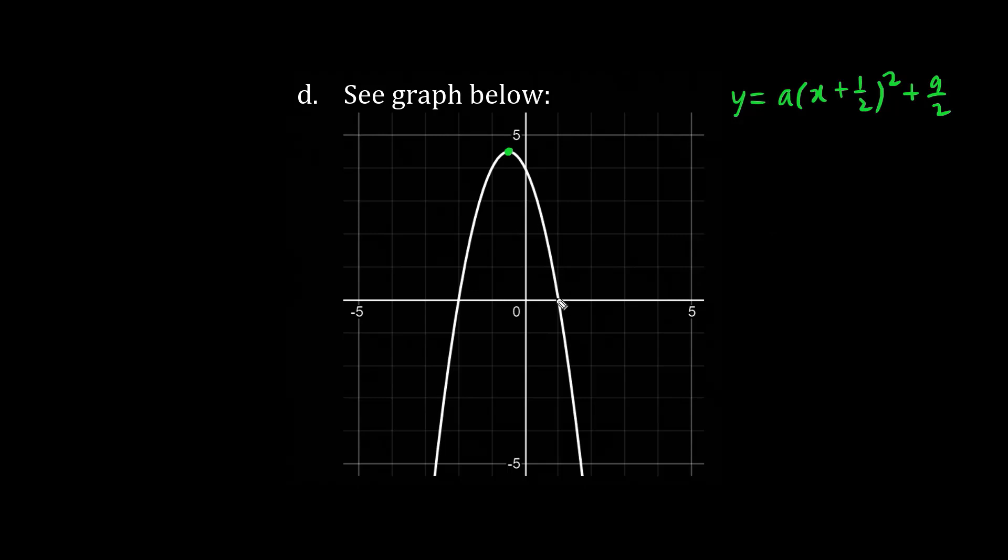And to find the A value, let's substitute this point, any point. One comma 0. So we have 0 equals A, x is 1 plus 1 half squared plus 9 over 2.